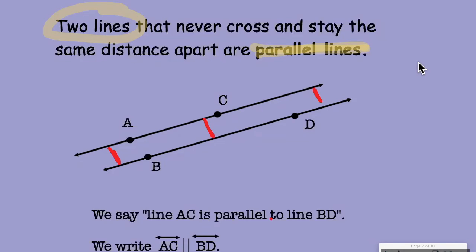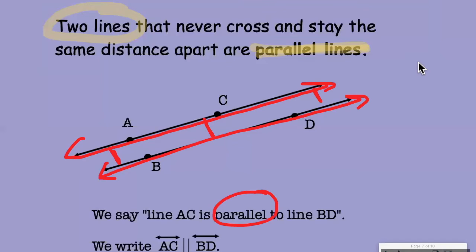When we write parallel, we would read this as line AC, which is this line right here, is parallel to line BD. When we write it though, the word parallel is indicated by a symbol, which is right here. It kind of looks like an L, but it's a little bit bigger than you would, or two L's, a little bit bigger than you would draw a regular L or a one. So that is how you indicate parallel.